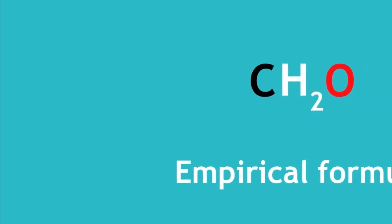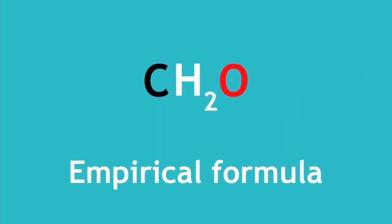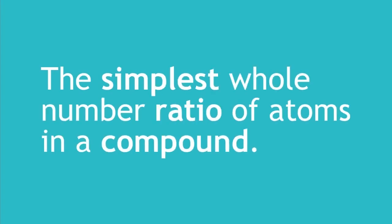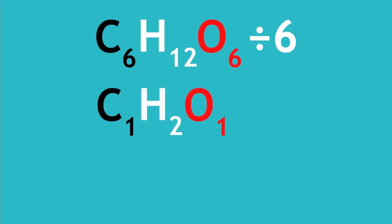Sometimes, the formula is reduced even further to make an empirical formula. The empirical formula is the simplest whole number ratio of atoms in a compound. We need to find the highest common factor, that being the largest whole number that is a factor of 6, 12, and 6 in this example of glucose. They all divide by 6, and so if we do this, we get C1H2O1.